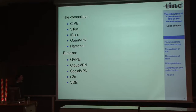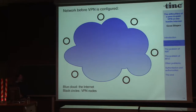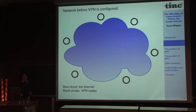So what do you want to do with tinc? We have the internet — the blue cloud — and some nodes, shown as black circles. A node can be a single laptop at a hotel or airport, or it can be a complete company network. We want to connect all these nodes together into a single VPN. Each node supplies configuration to tinc so it can connect to the other nodes. The topology is up to you.